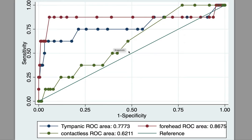Here you have the ROC curve. This diagonal line is the reference standard. The red line is the forehead thermometer and it has given you the ROC area under the curve. The blue line is the tympanic thermometer — again you can see the area under the curve. The contactless is the green line and it has given you the area under the curve. Each of these are being plotted against the oral thermometer, which is our reference standard, so it doesn't plot the oral — it plots the other three classification variables.